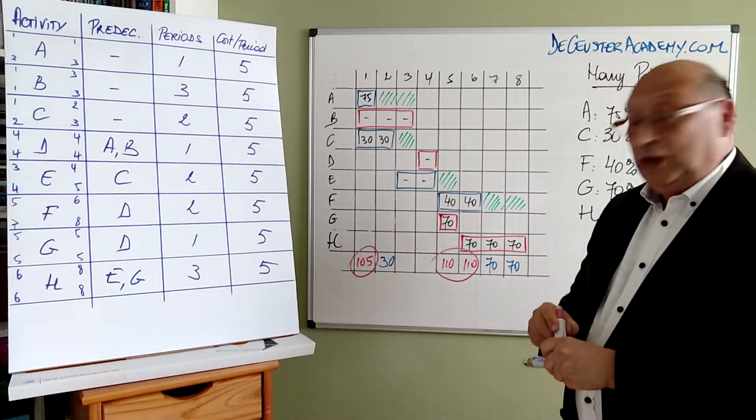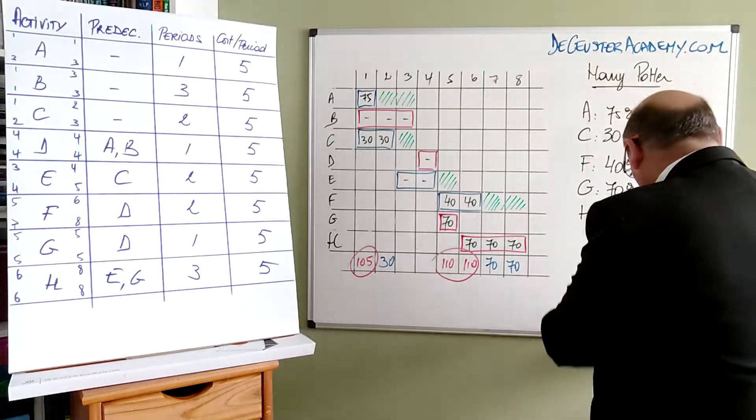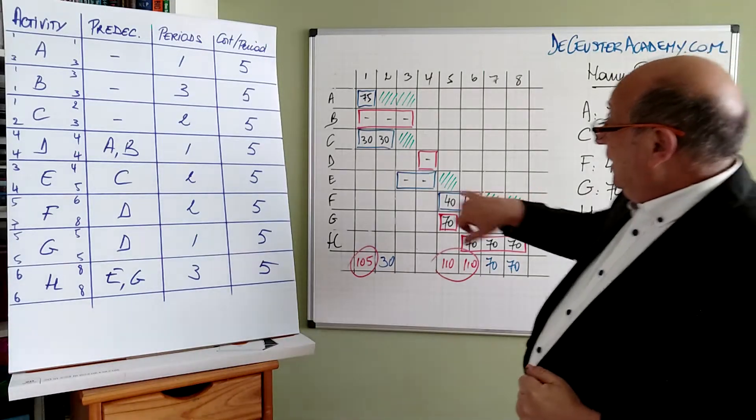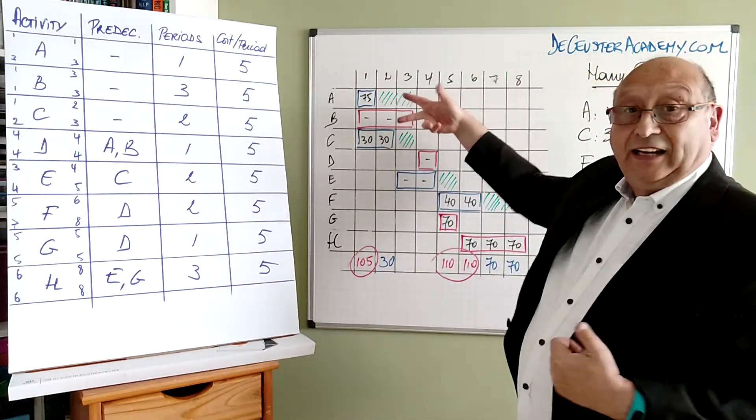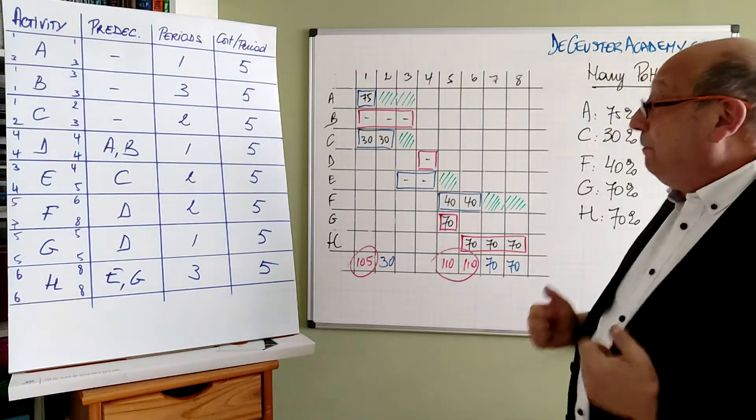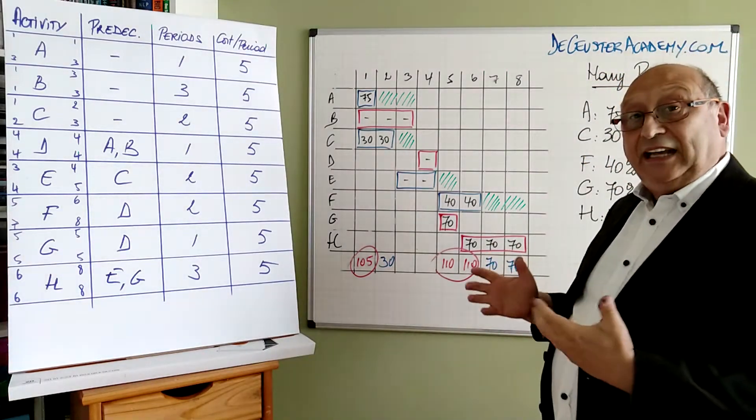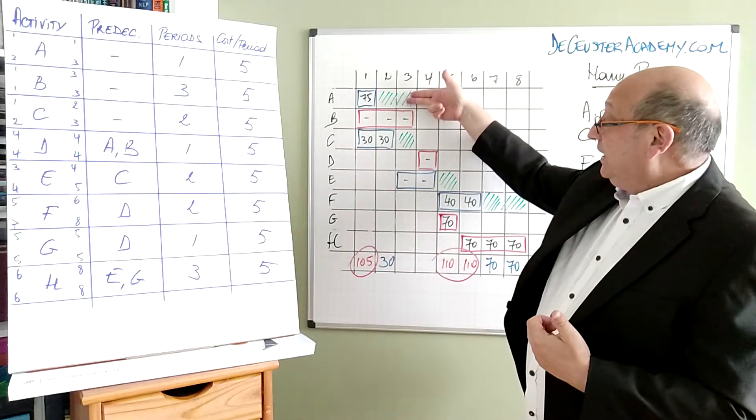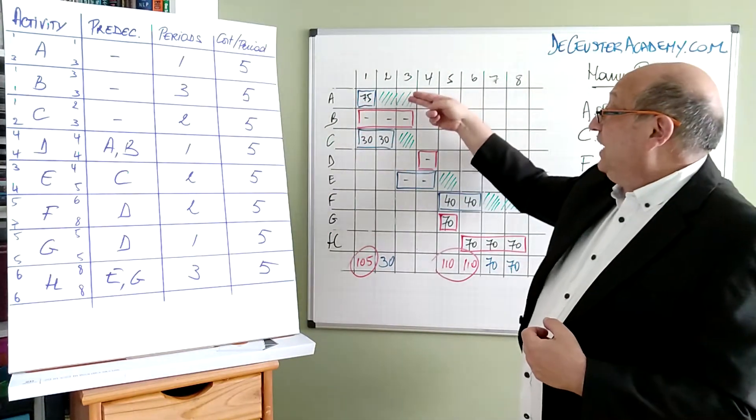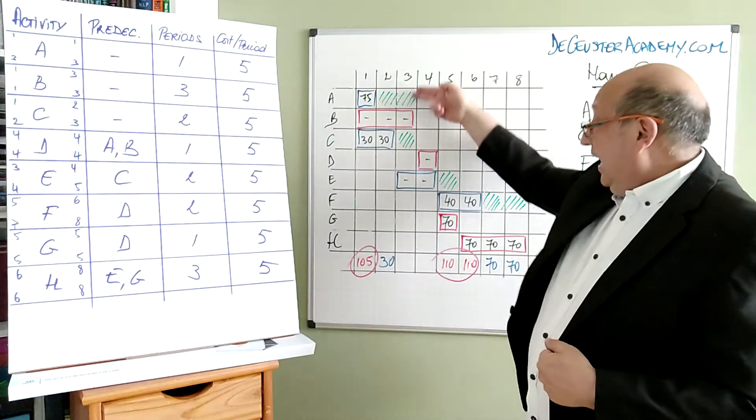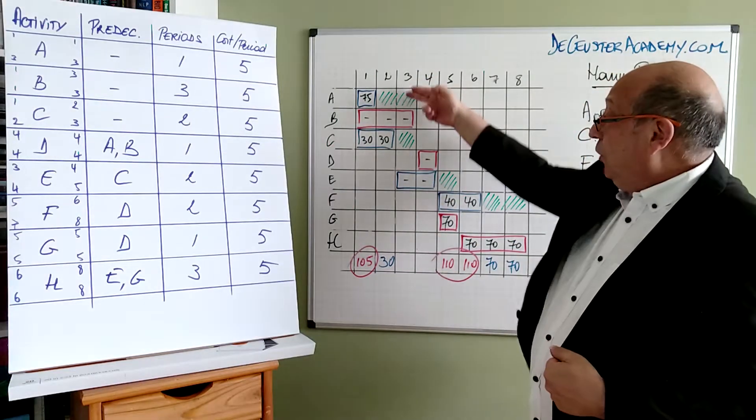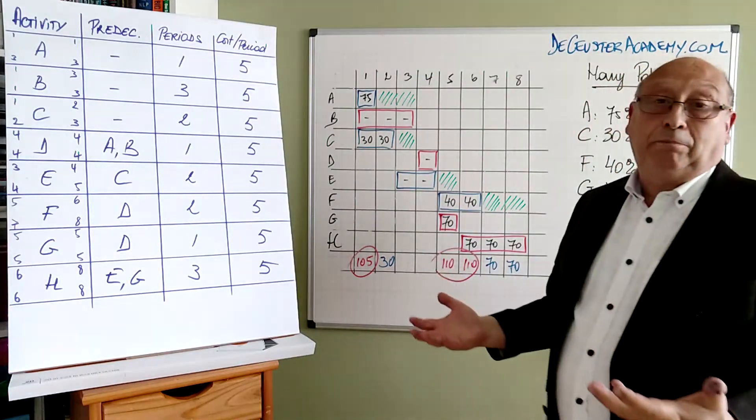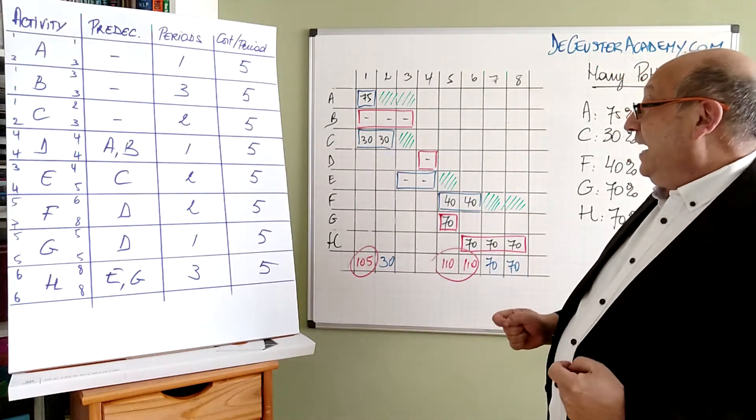Now what can we do? Now we are lucky in this case here, we have activity A and C, which have slack. So these are not critical path activities. And what I can do, I can move activity A, for example, here. When I move activity A to period 3, I see that we don't have a problem anymore. That's one possibility what we can do with activity A.